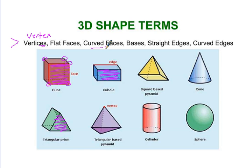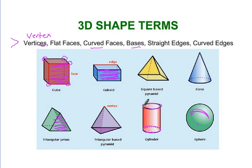A curved face is what you would see on a sphere because it curves around — it doesn't lay flat. A base is something that's not a polygon that's at the end of a shape. This shape has two bases.